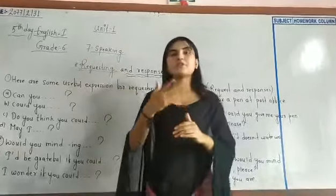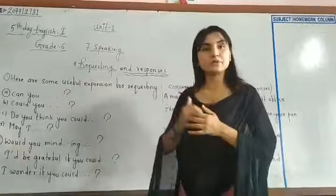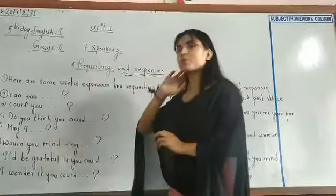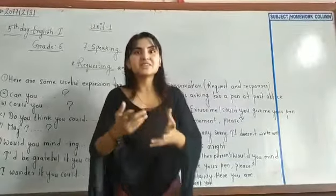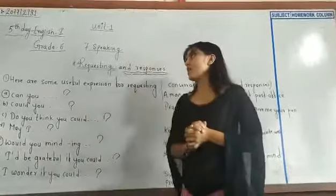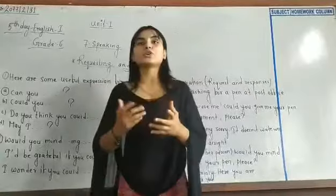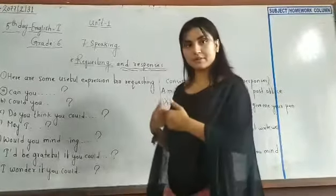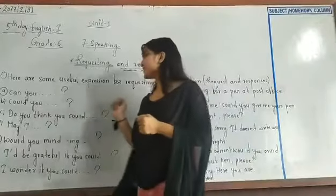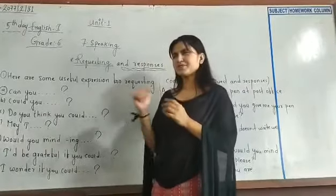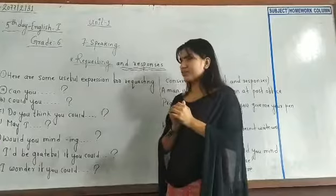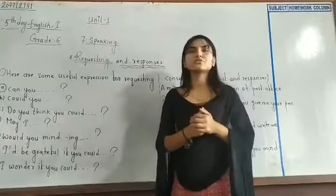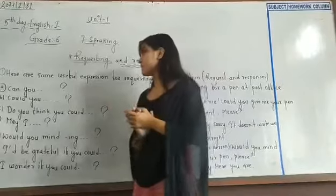For example, 'Can you give me your pen? Can you lend me your pen?' — this is a polite way of requesting. Number 2: 'Could you come here? Could you give this? Could you lend me this?' Number 3: 'Do you think you could do this? Do you think you could lend me your pen?' Understood.